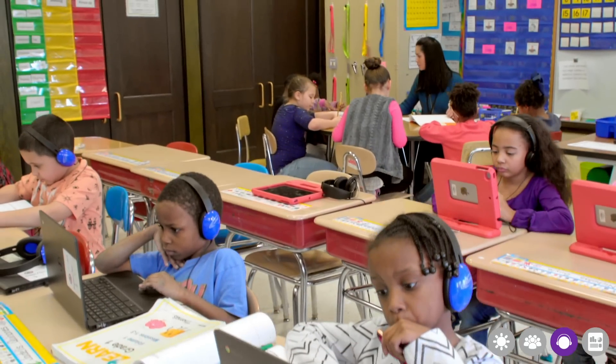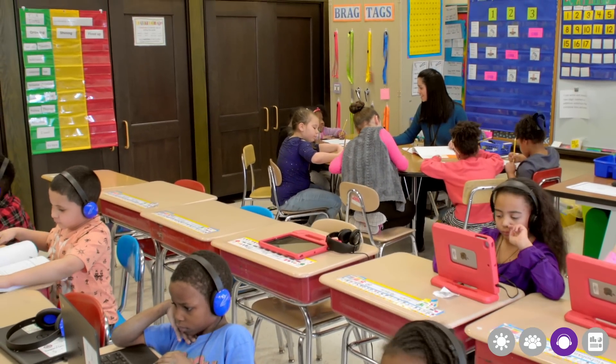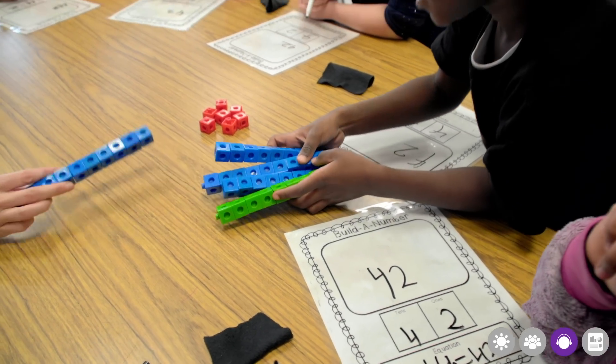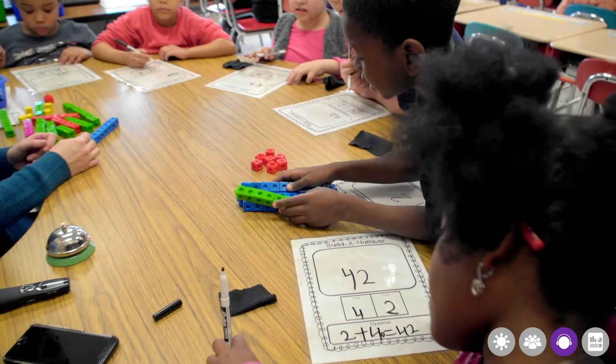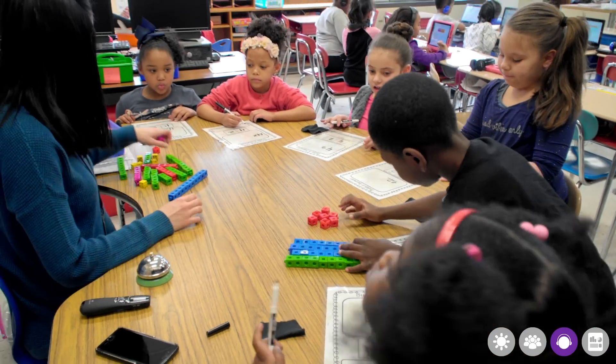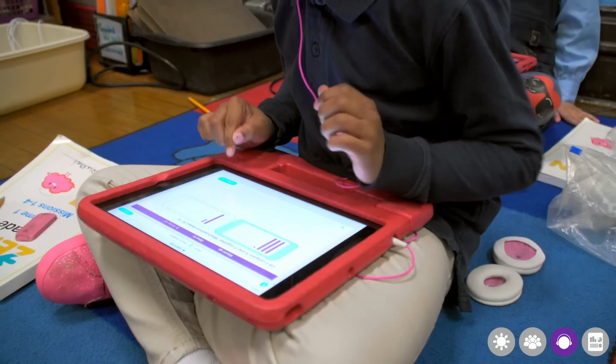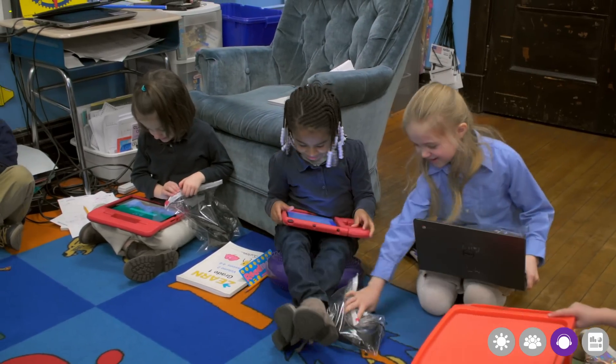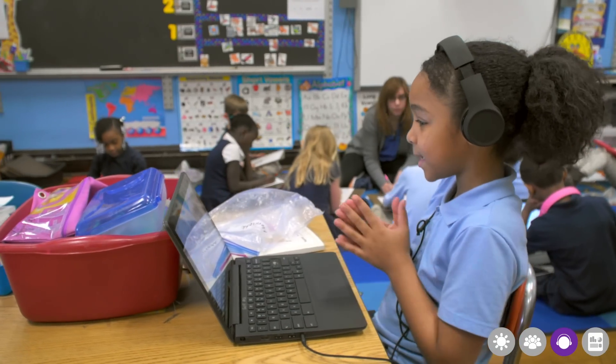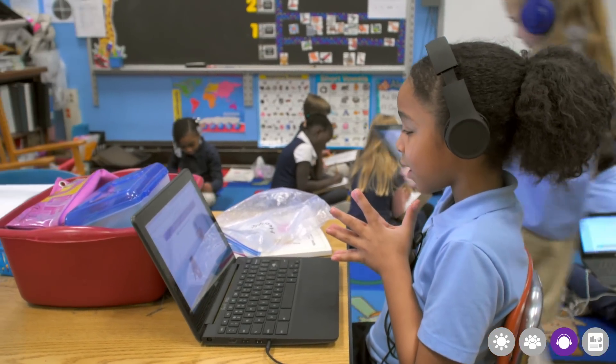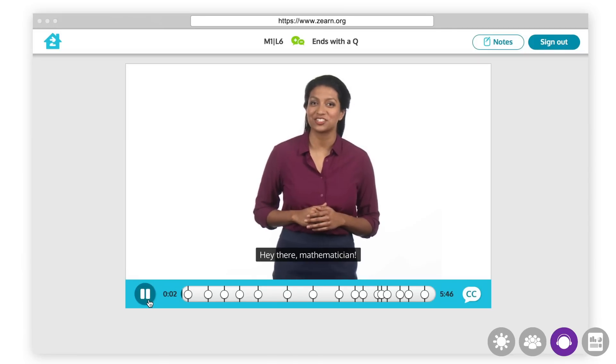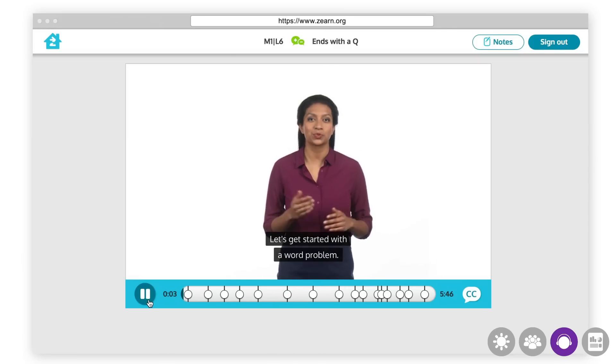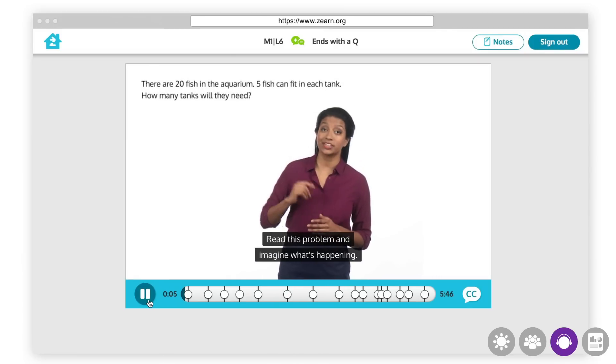Throughout the digital lesson experience, Zearn aims to represent the diversity found in classrooms across the country, so all students can see someone similar to themselves learning math and persevering through challenges. We also strive to make our digital lessons accessible for all students, in line with our mission to ensure all students love learning math. Digital lessons include closed captioning, audio supports, and keyboard accessibility intended to provide support for a diverse range of learners.